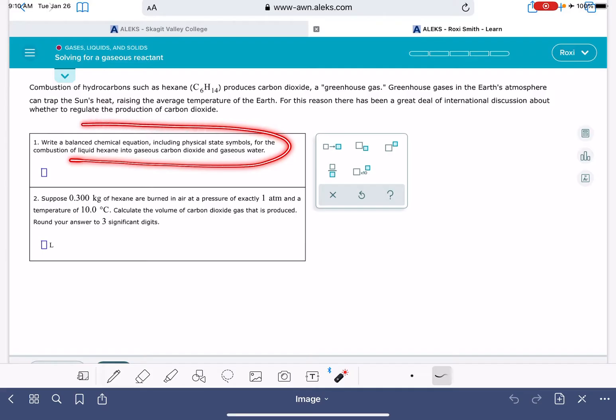The first part is asking us to write a balanced chemical equation for a particular reaction. In this problem, the reaction that I'm writing the equation for is liquid hexane, which the formula is given to us right here, C6H14. It does say we have to include the physical state symbols, so that means you have to include the L for liquid. This is the combustion of liquid hexane. Combustion means that you are reacting with oxygen gas, O2.